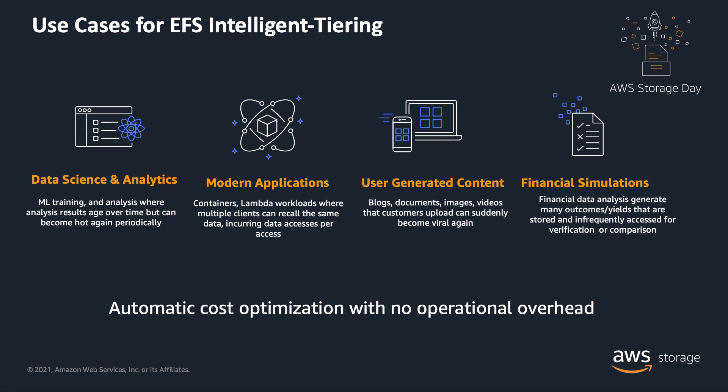What are the use cases for EFS Intelligent Tiering? Any workload will benefit from EFS Intelligent Tiering, but particularly workloads where data access patterns are unpredictable. These span data science workloads, modern applications like containers and Lambda where concurrent access to a set of files is common, user-generated content that tends to get popular or unpopular as time goes by, and financial simulations.